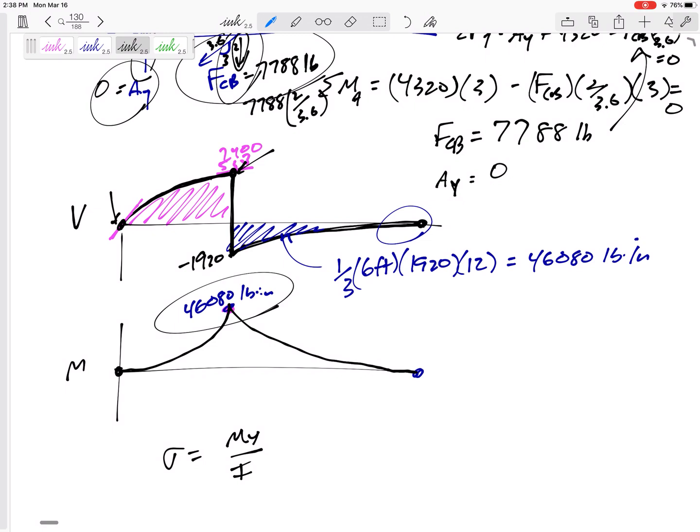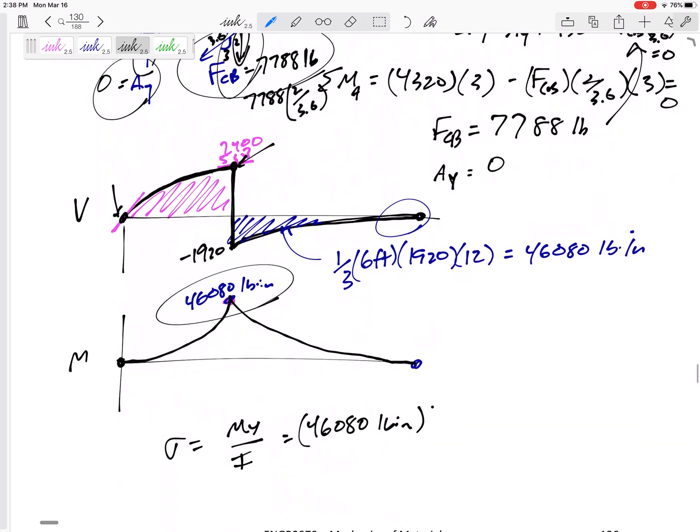M y over I. So the M is 46,080 pound inches. The y, this one they gave it to us in a very roundabout way.